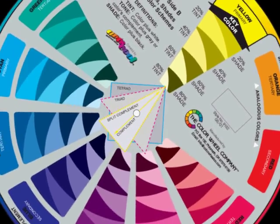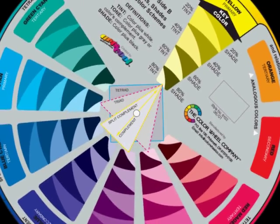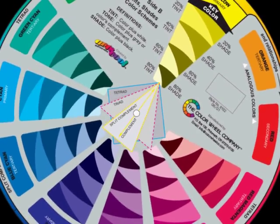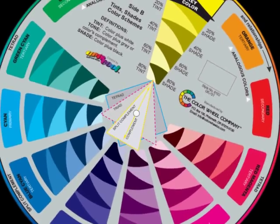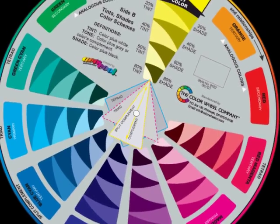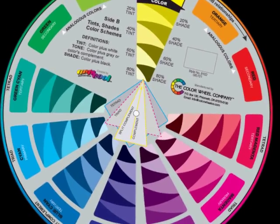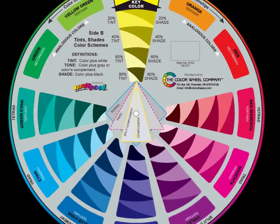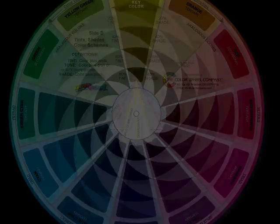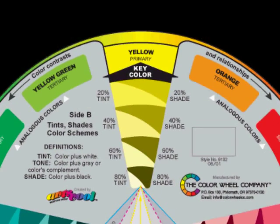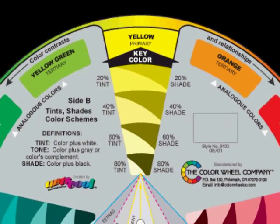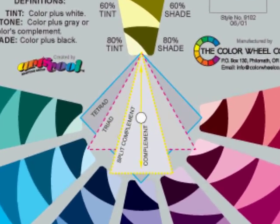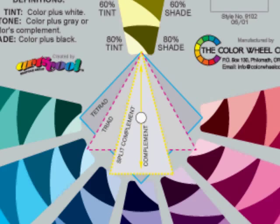Hi, I'm Bev Harkas and I'd like to introduce you to Side B of the CMY Primary Mixing Wheel. As I mentioned in the Side A video, the CMY Color Wheel is a tool that can be used to help you mix colors and to combine colors. Side B helps you to make tints and shades, and it also shows some color relationships or schemes for combining colors.